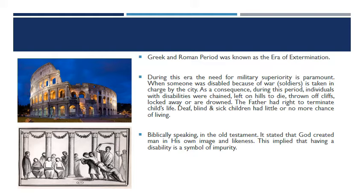During this era, the need for military superiority was paramount. War between groups was common, and when someone was disabled, the city took charge. The consequences for individuals with disabilities included being chained, left on hills to die, thrown off cliffs, locked away, or drowned. The father had the right to terminate a child's life. The deaf, the blind, and sick children had little or no chance of living. You can see how brutal people were during the Greek and Roman period.